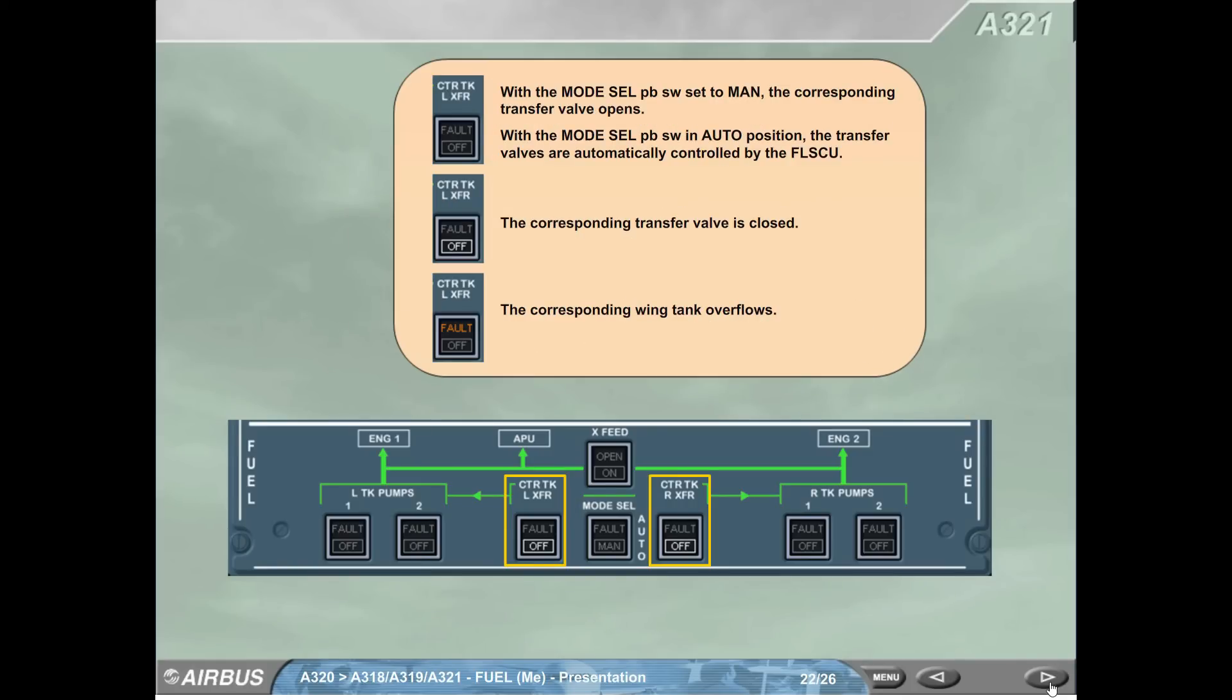With the mode cell push button switch set to manual, the corresponding transfer valve opens. With the mode cell push button switch in auto position, the transfer valves are automatically controlled by the FLSCU. The corresponding transfer valve is closed. The corresponding wing tank overflows.